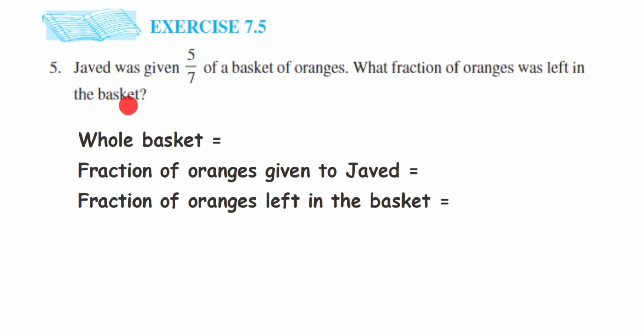In the question, Javed was given 5/7 basket of oranges. We know that the whole basket is 7/7. Why 7/7? Because the denominator is 7.